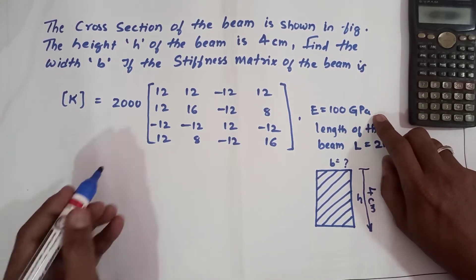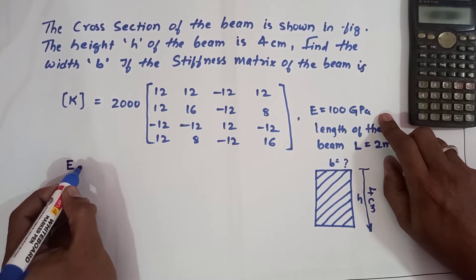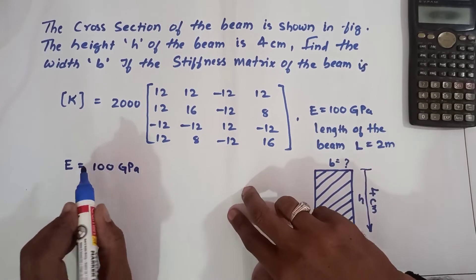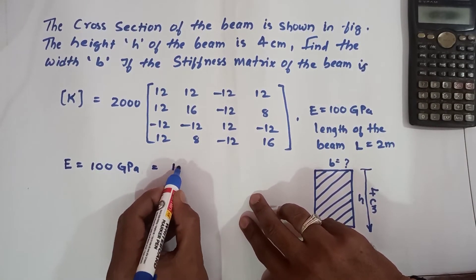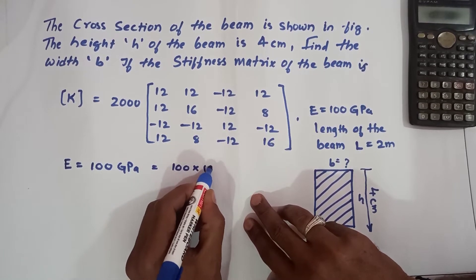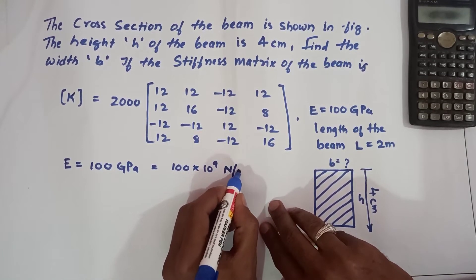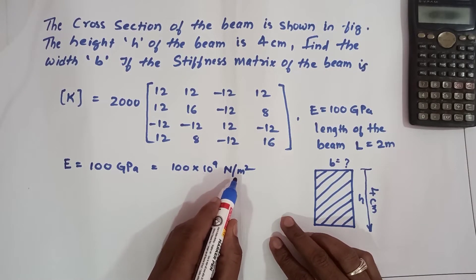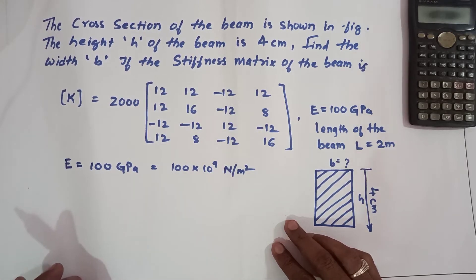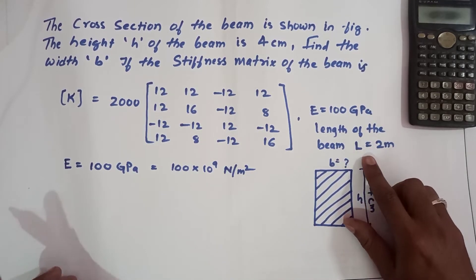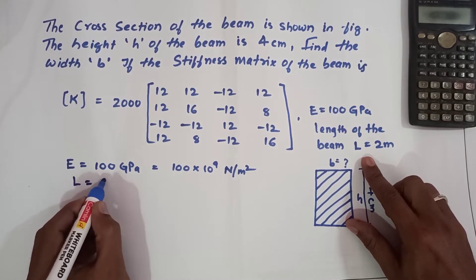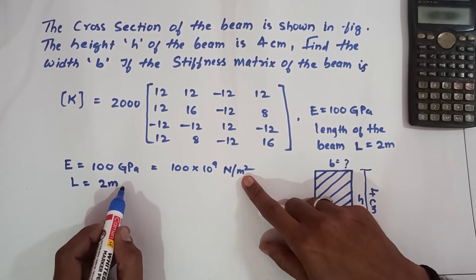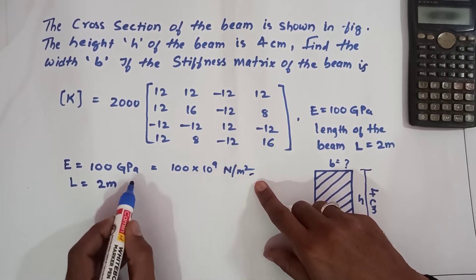Some of the given values are: the Young's modulus E is given as 100 gigapascal — that is 100 × 10⁹, where Pascal equals Newton per meter squared. You can convert into Newton per millimeter squared or Newton per meter squared. The length of the beam is given as L = 2 meters. Since both the Young's modulus and L are in meters, I have chosen to use Newton per meter squared.